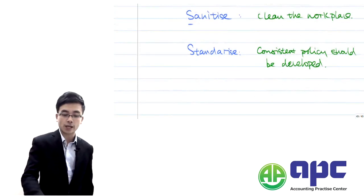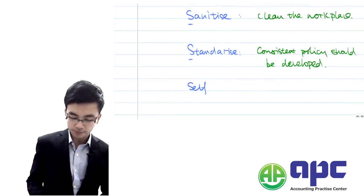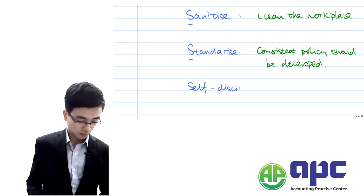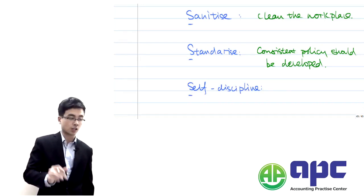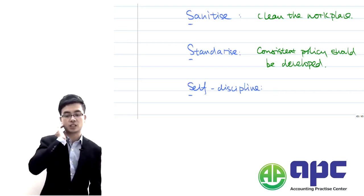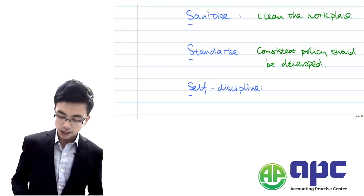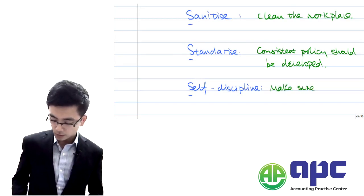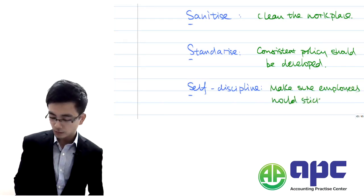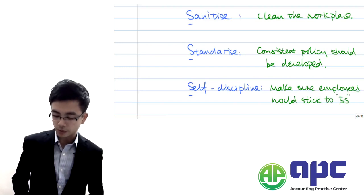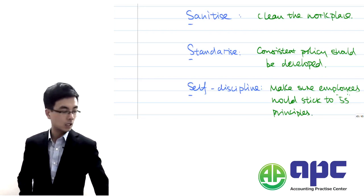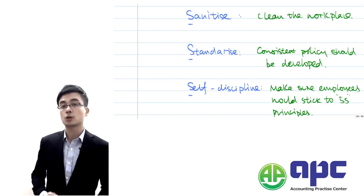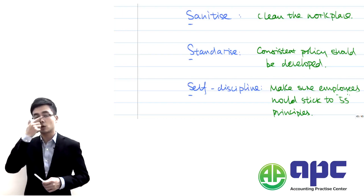Finally, the fifth S stands for Self-Discipline. This means we encourage employees to follow the 5S principles by giving them rewards and setting up performance measurement targets or objectives. If you follow the 5S model, you can motivate employees and make sure that the quality of the product will be good.